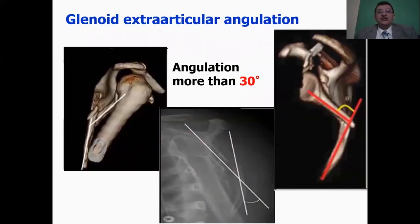Why about extraarticular angulation? More than 30 to 45 degrees can result in dysfunction of the shoulder muscles and scapular dyskinesia.